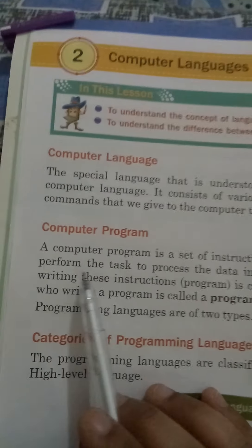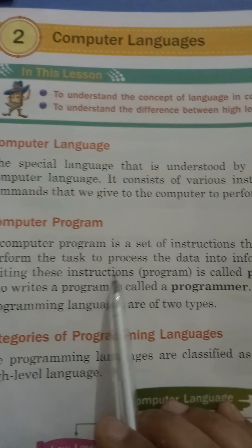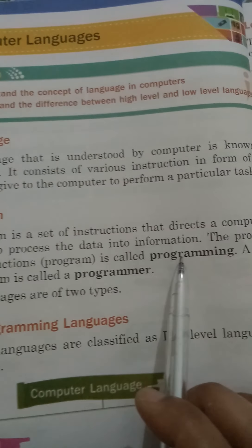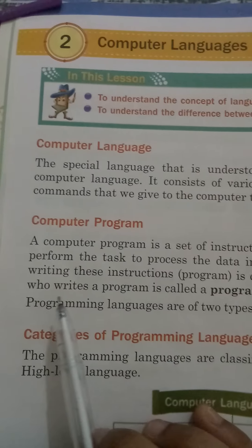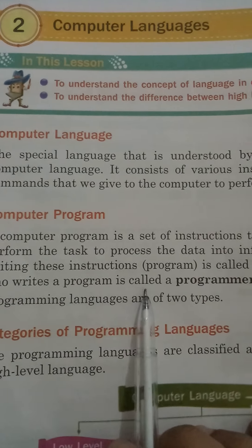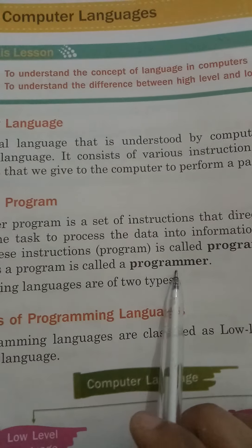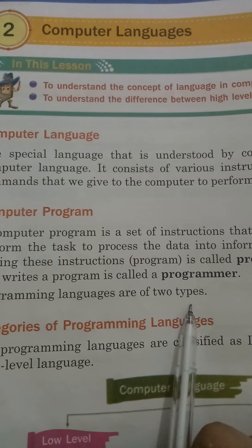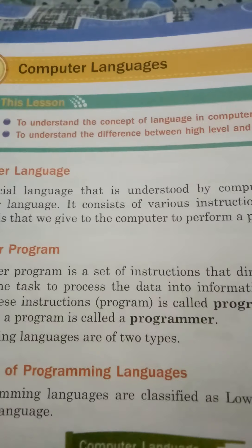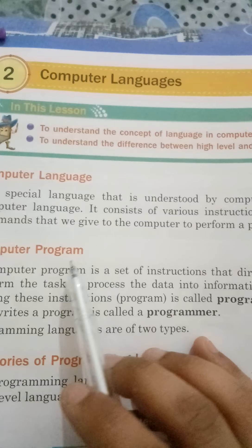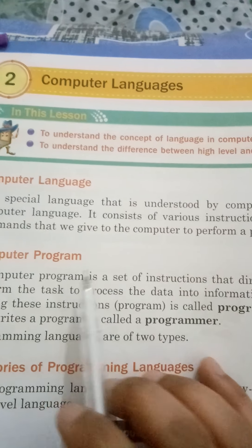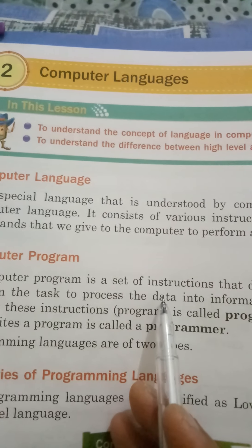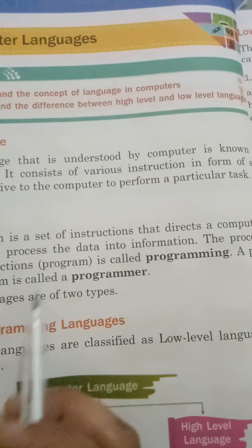A computer program is a set of instructions that directs a computer to perform the task to process the data into information. The process of writing these instructions, that is, program, is called programming. A person who writes a program is called a programmer. Programming languages are of two types.